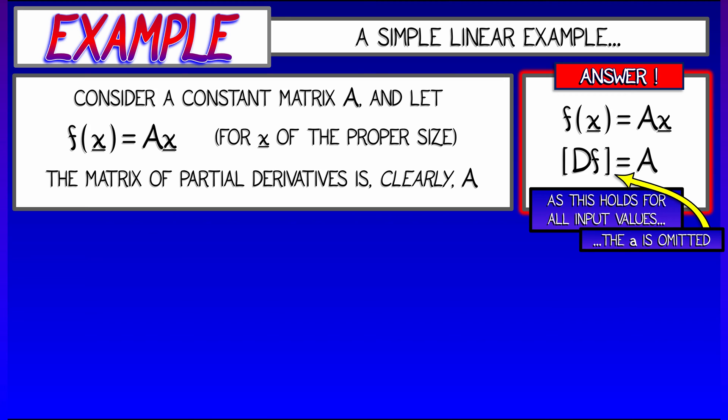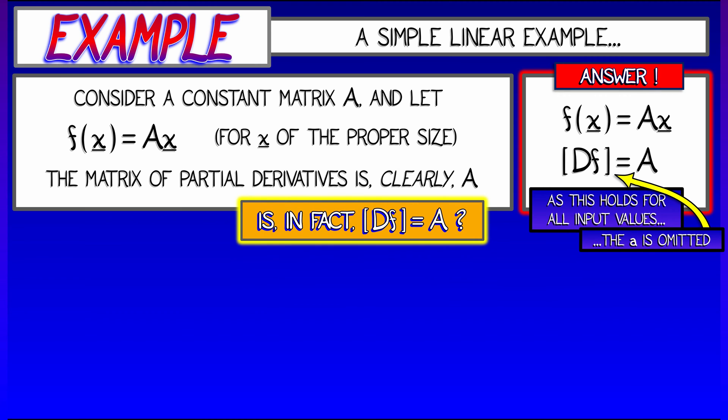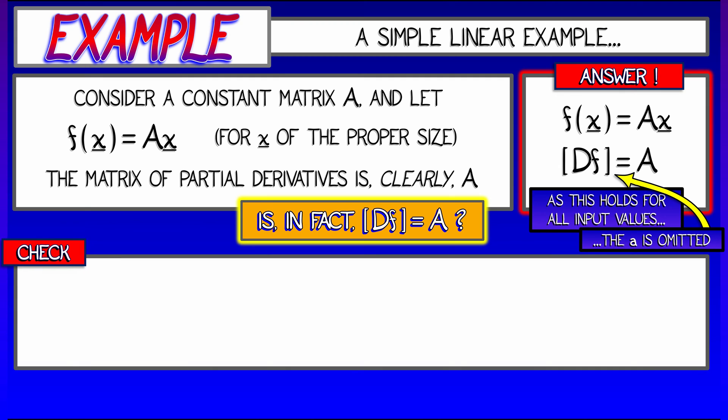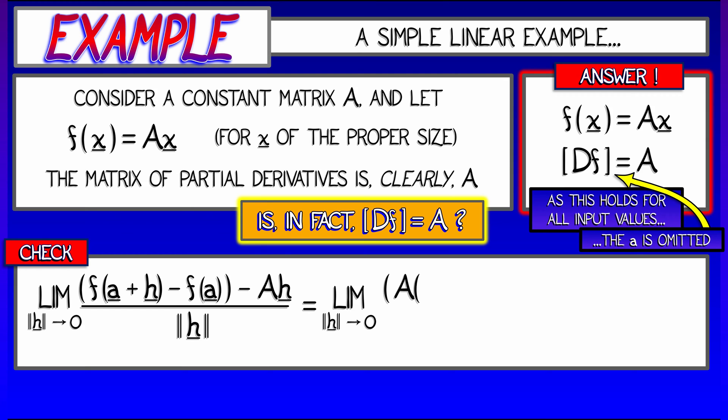That's certainly what the answer would appear to be. But is this the truth? Is it in fact true that the derivative of f is A? Let's compute the limit as h goes to zero of [f(a+h) - f(a) - Ah]/|h|, all divided by length of h.